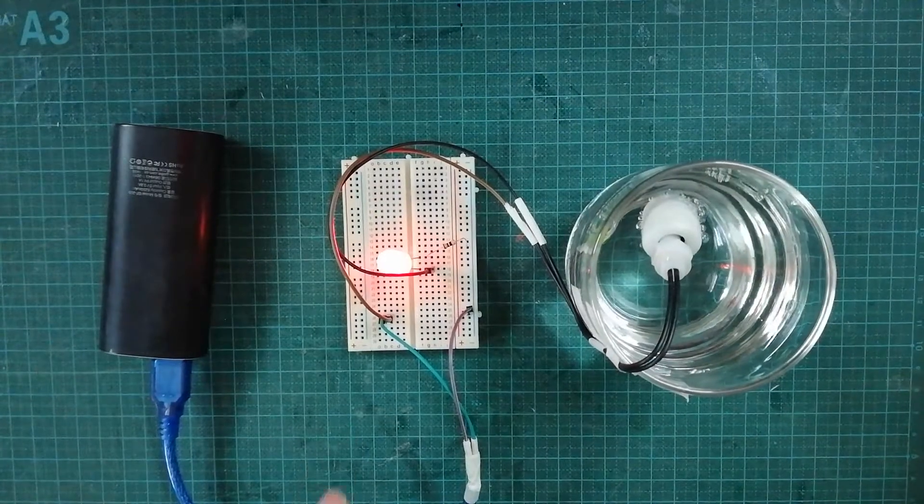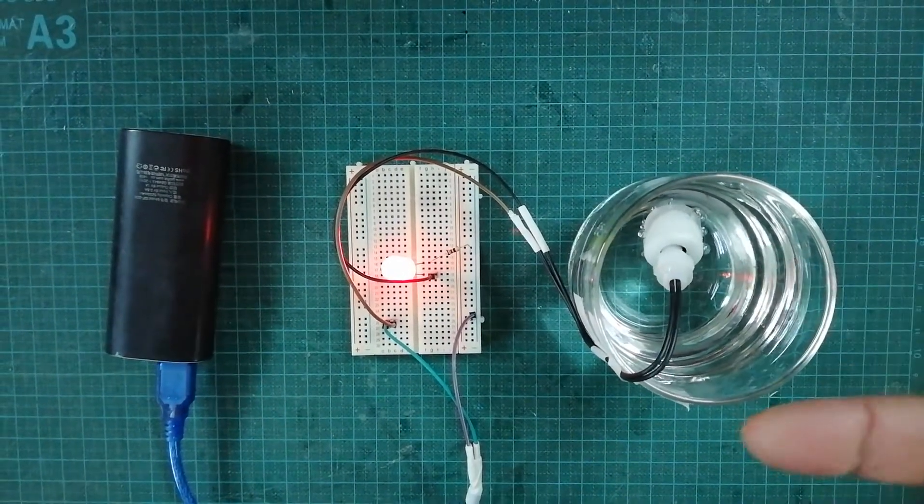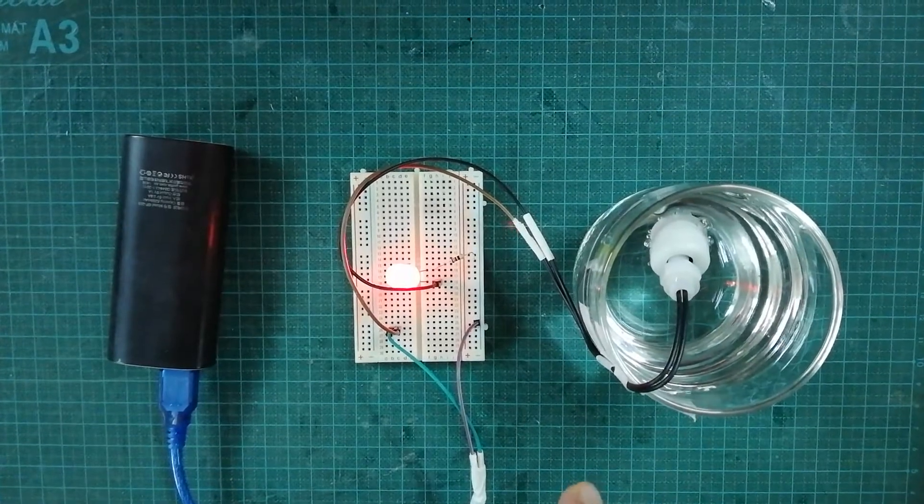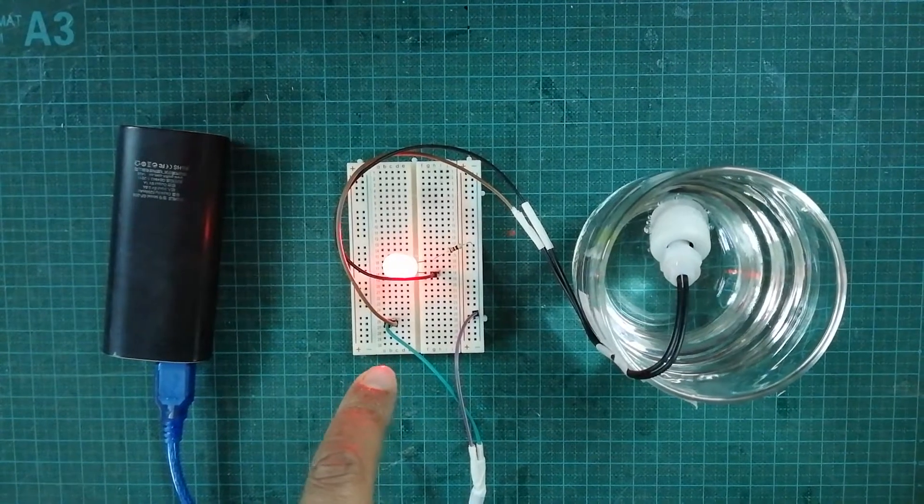You can see when the water level rises, the cylinder goes up and the contact is completed and short-circuited. Here the LED is blinking.